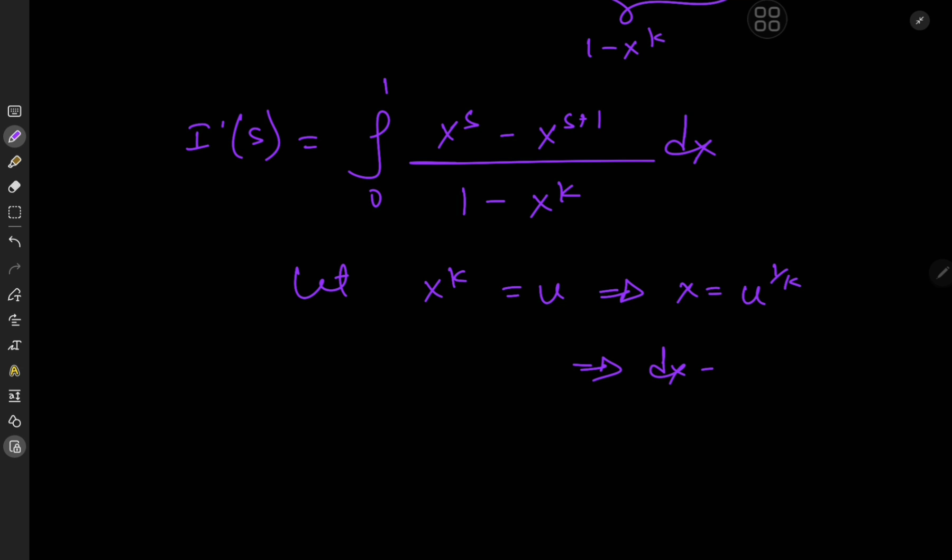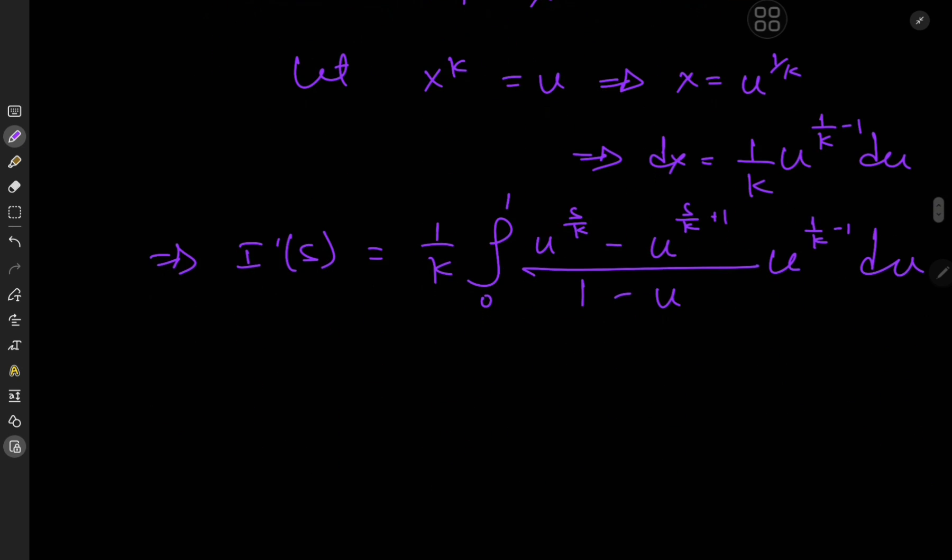Let's make a u substitution. We're going to let x to the k equal u. This implies that x equals u to the 1 by k, and this further implies that dx equals 1 by k times u to the 1 by k minus 1 du.